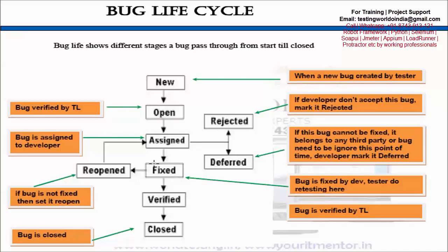Once the bug is set to open, the testing team's task is done. From here, the task of the development team begins. As a development lead, I check how many bugs are open. The development lead will assign this bug to a developer. Once the bug is assigned to a developer, the status would be 'assigned'. Now the bug is in the bucket of the developer, and the developer will start working on it.